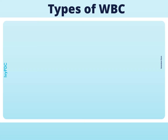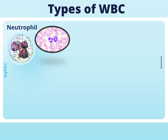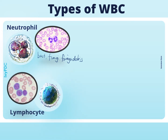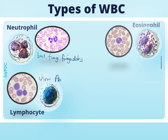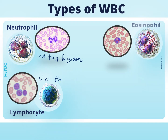Before proceeding to the differential count, let's review the different types of white blood cells. The first is the neutrophil, which is described as multi-lobed and kills bacteria, fungi, and foreign debris. The second is the lymphocyte, which has a deep-staining, usually eccentric nucleus; lymphocytes help fight viruses and make antibodies. The third is the eosinophil, which is bilobed with distinct red granules and is responsible for killing parasites and cancer cells, and is involved in allergic responses.